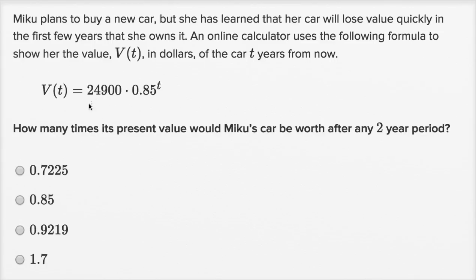Let's look at this. So when t equals zero, it's always good to see the starting conditions. When t equals zero, so V of zero, time equals zero, that's when the car's brand new. 0.85 to the zero power is just going to be one. So the brand new value of the car is $24,900.